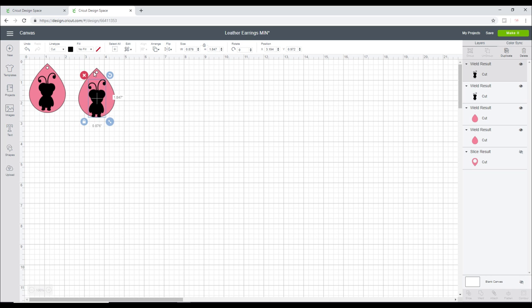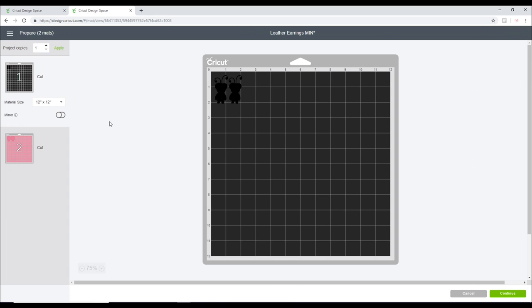I'm going to cut out my earrings in Cricut metallic leather, and then my cutie is going to be a foil iron-on. So we're going to go to Make It. I'm going to just move that cutie along slightly, mirror my iron-on layer, but keep my metallic leather layer the same.